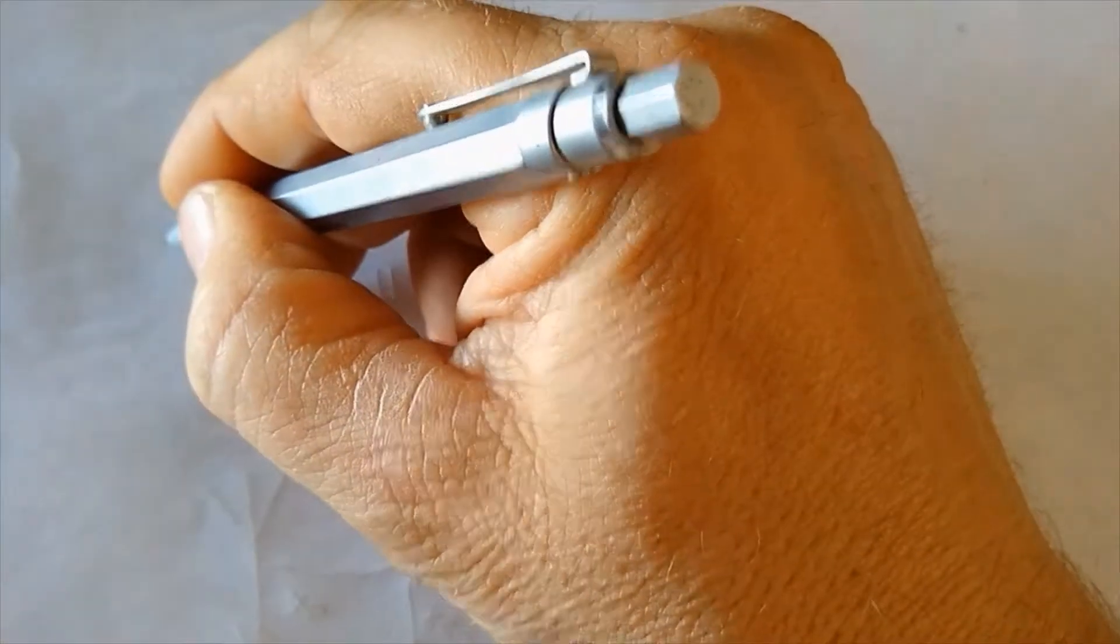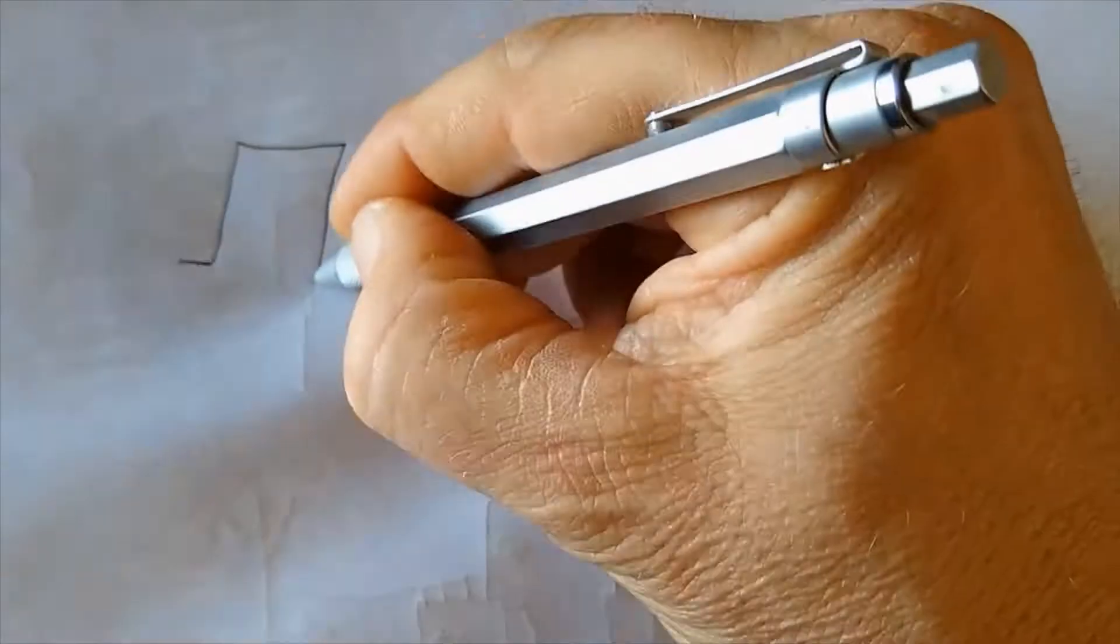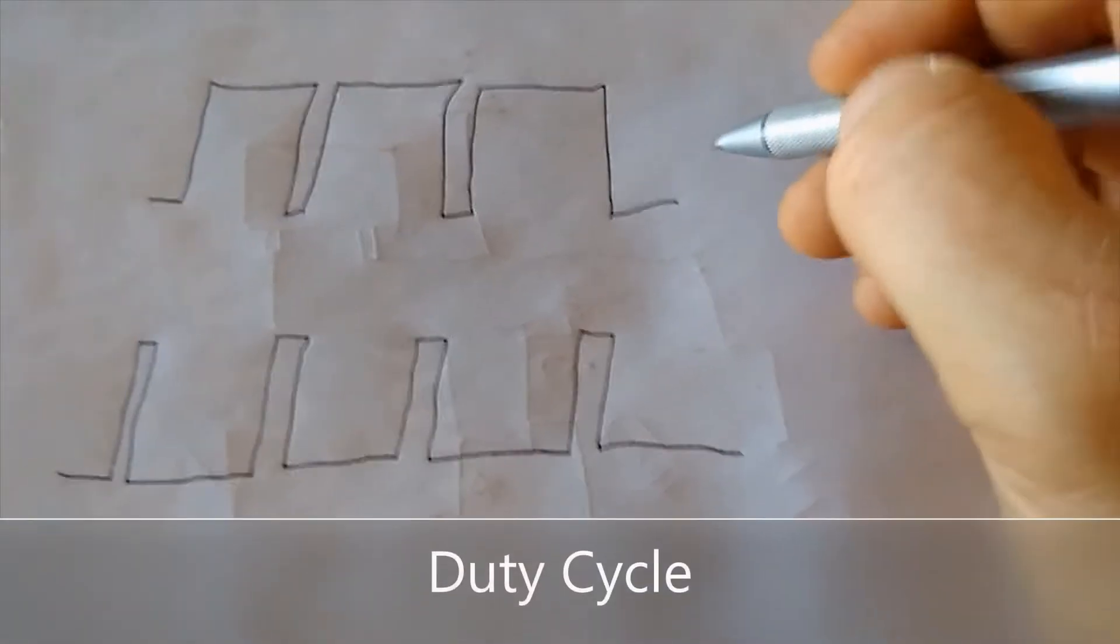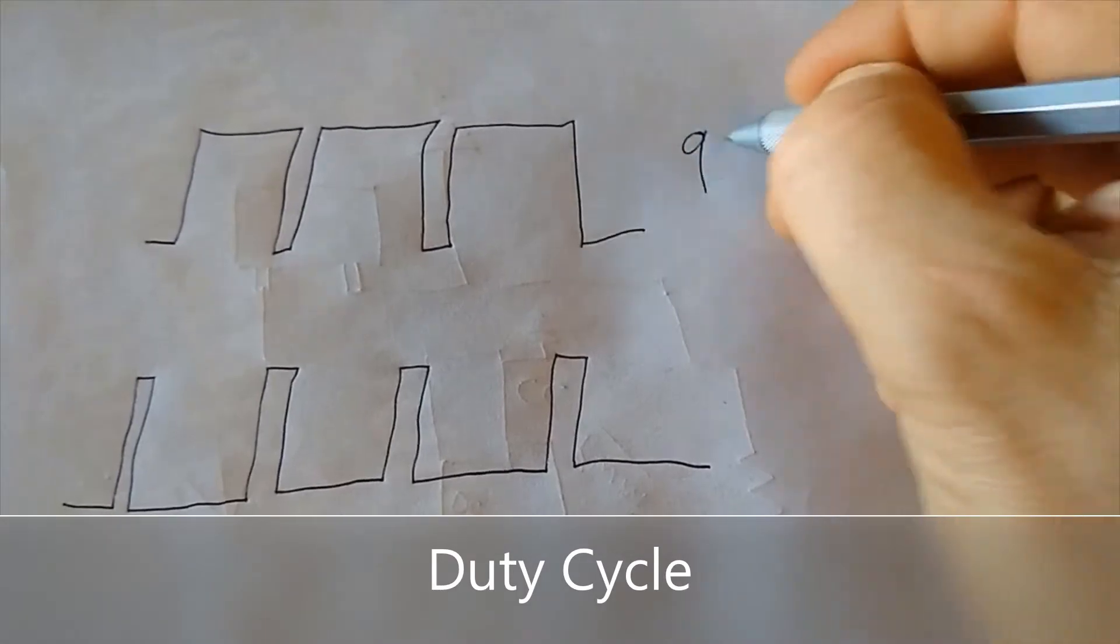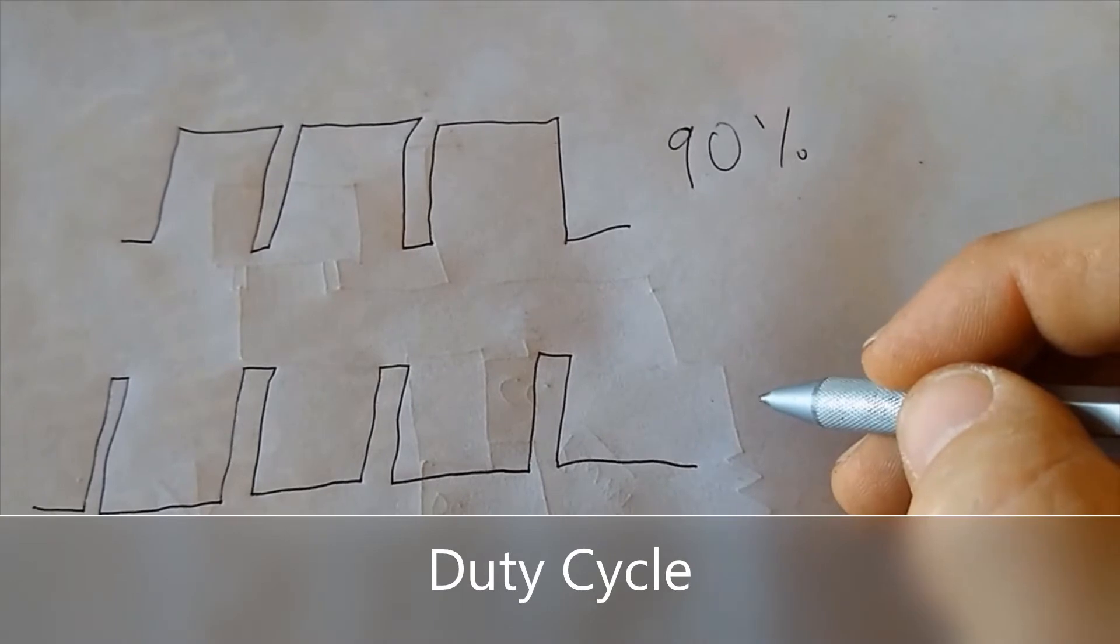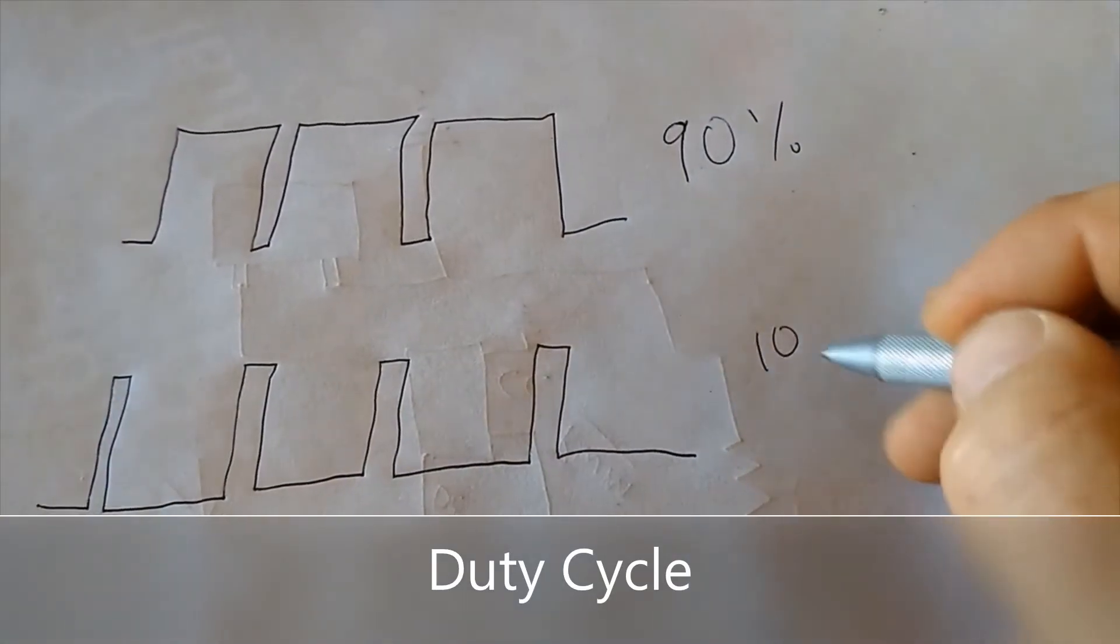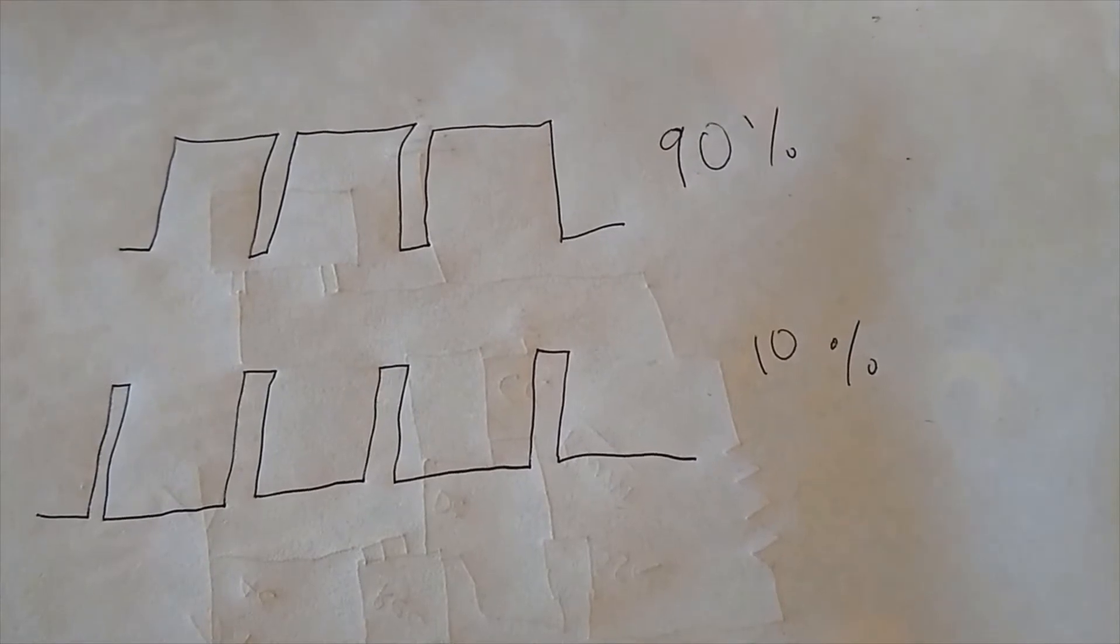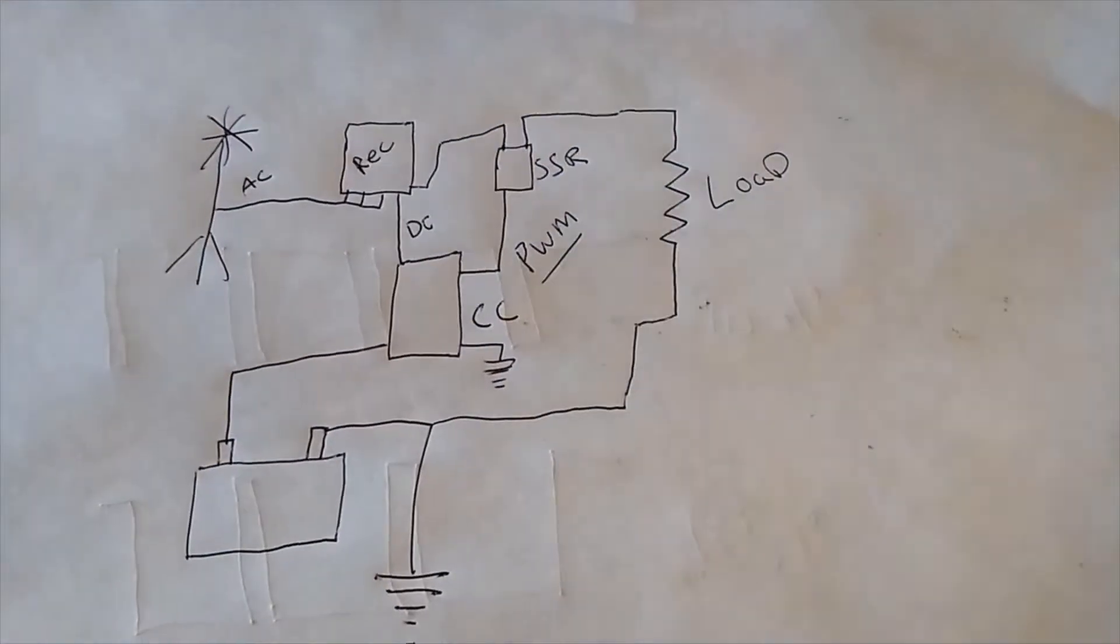And a PWM signal basically looks like this: it's just a bunch of pulses and the width of the pulse is varied in order to determine how much power is sent through that solid-state relay to the diversion load. So you can see the top one is a wider pulse at 90 percent and then that narrow pulse at the bottom would be like 10 percent.